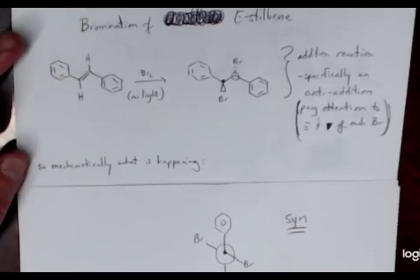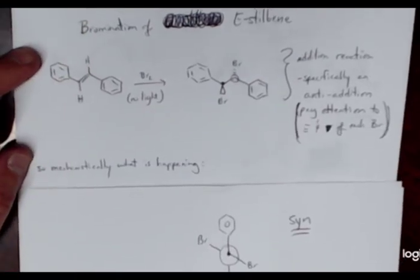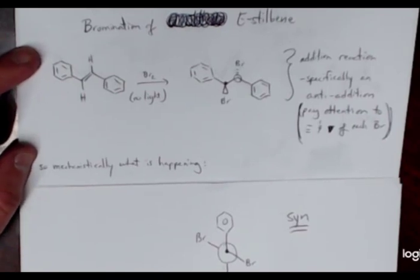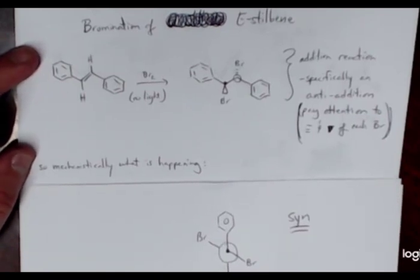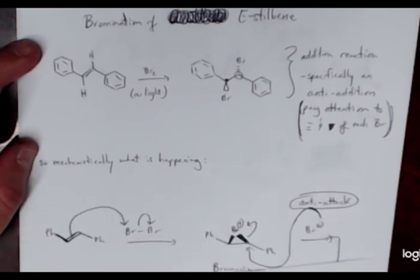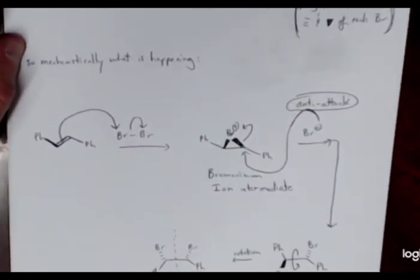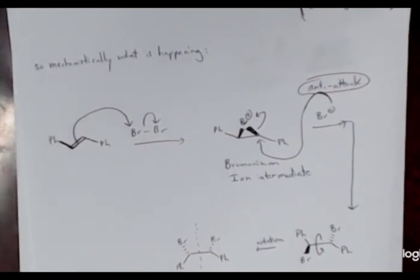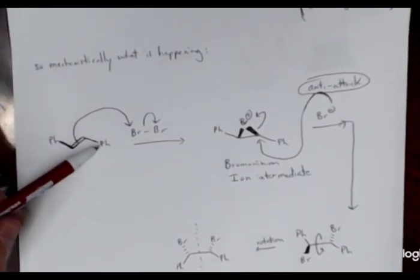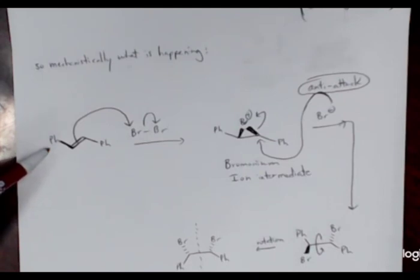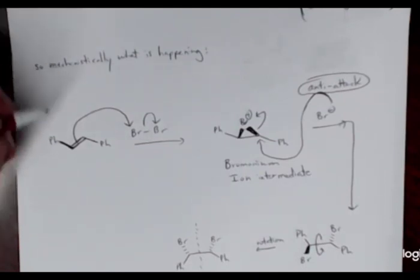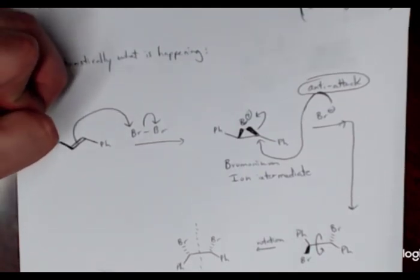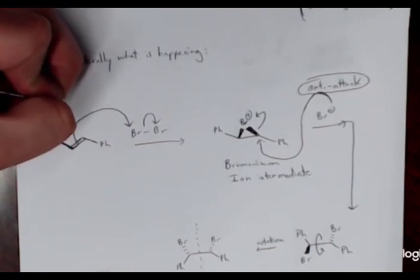And so mechanistically, what is happening here? Why are we seeing an anti addition? If I'm going to be so specific as to talk about stereochemistry in my addition product, what's happening here mechanistically? So we want to kind of look, if we take a look, I have, instead of drawing these benzene rings repeatedly, I just wrote Ph for phenyl. So Ph is just the same thing as saying that it's a benzene ring.